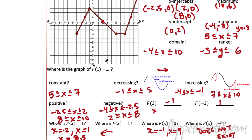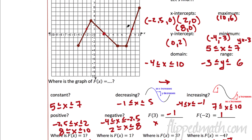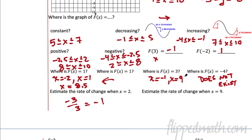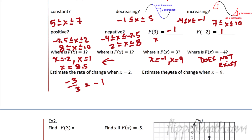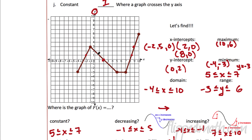Estimate the rate of change when x equals 9. X equals 9 right here — what's the rate of change? You have to go up 3 over 1, so it's about 3. Notice here it's negative and here it's positive: negative means we're decreasing, going downhill; positive means we're increasing, going uphill.